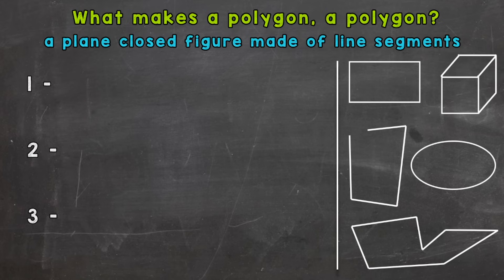Before I start that, polygons have specific names. For example, a three-sided polygon is a triangle, a four-sided polygon would be a quadrilateral. I'm going to go through those specific names in another video. I dropped that link down in the description. Let's get back to what makes a polygon a polygon.